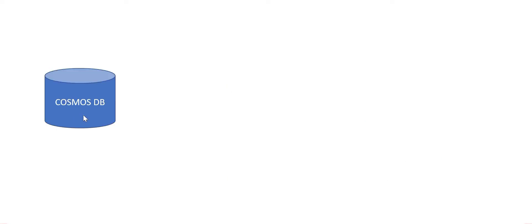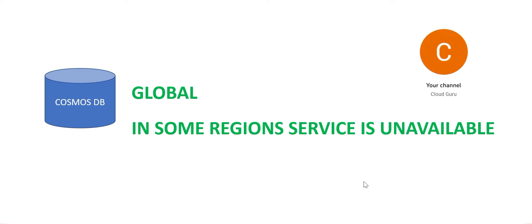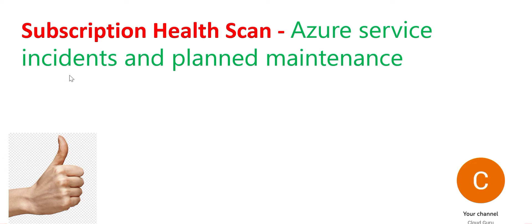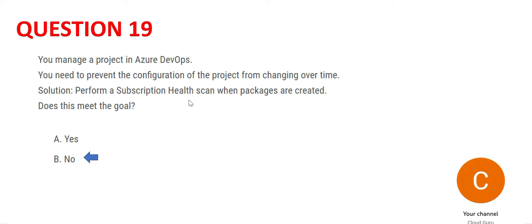Suppose there is a Cosmos DB database which is a global database, and in some regions this service is not available. For example, it may be available in the US and some regions, but not in London or India — that would create a service incident. Subscription health scan lets you see in one go which services are unavailable, what incidents exist, and when planned maintenance is scheduled. However, the answer here is no, because this will not help you prevent configuration changes.